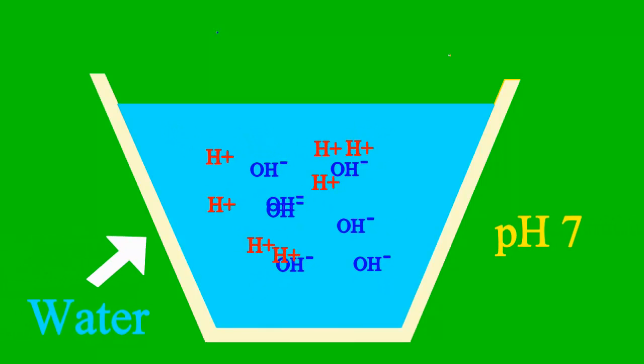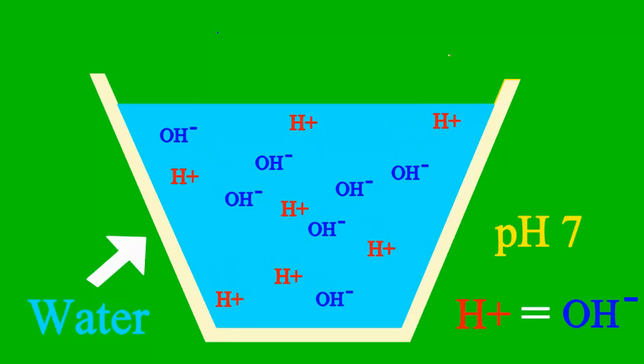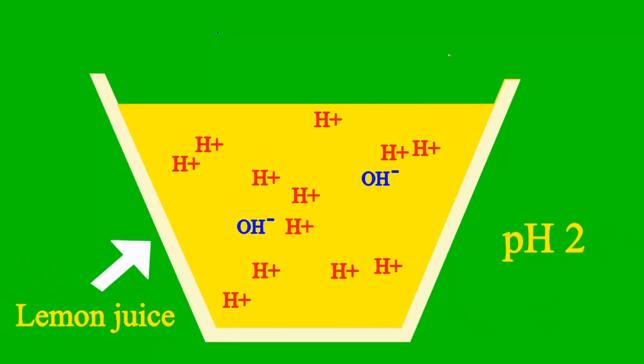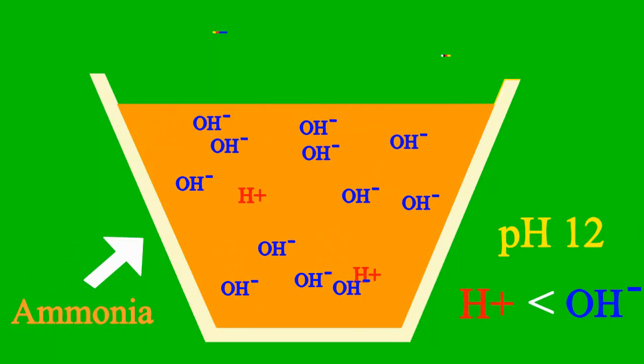When the pH is 7, then it's a case where the sample is neither an acid nor base. But less than 7, it's an acid, we say. More than 7, it's a base all the way.